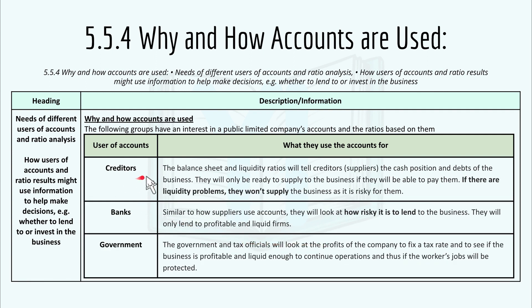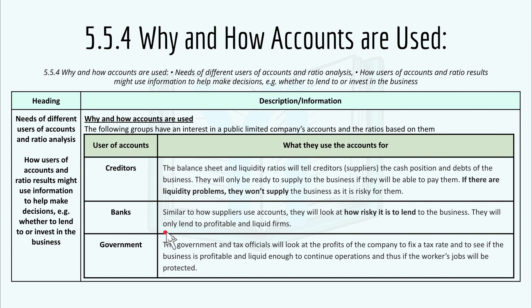Creditors: the balance sheet and liquidity ratios tell creditors or suppliers the cash position and debt of the business. They will only supply if the business can pay them — if there are liquidity problems, they won't supply as it is risky. For banks, similarly, they will look at how risky it is to lend to the business and will only lend to profitable and liquid firms. Governments and tax officials will look at profits to fix a tax rate and assess whether the business is profitable and liquid enough to continue operations, protecting workers' jobs.